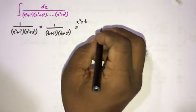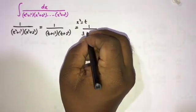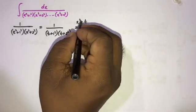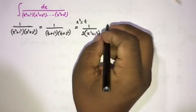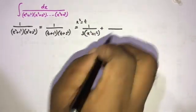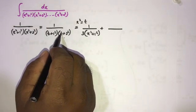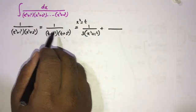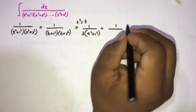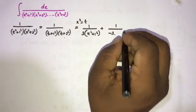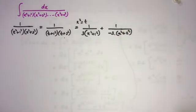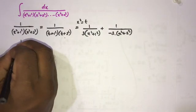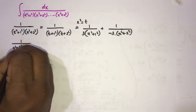So we can write this term as 1 over 3(x²+1²). Now if we plug in t=-4, we get -4+1 = -3, so we write this is equal to 1 over -3 times (x²+2²).